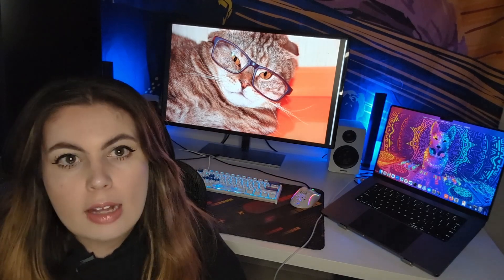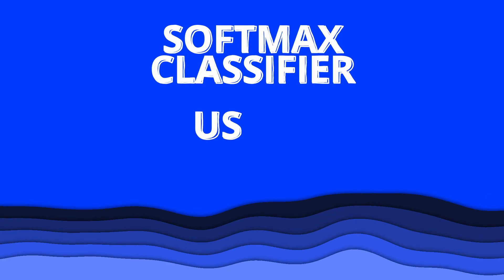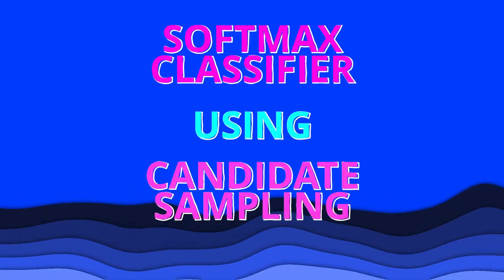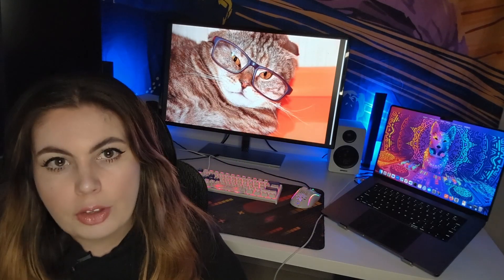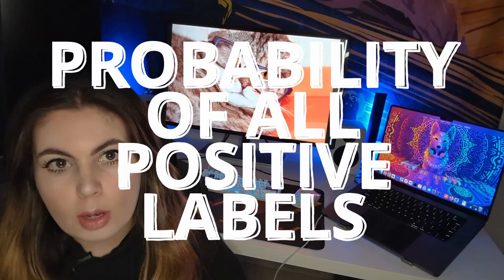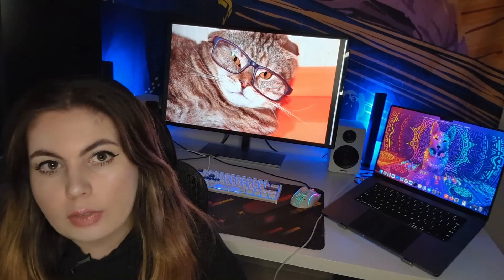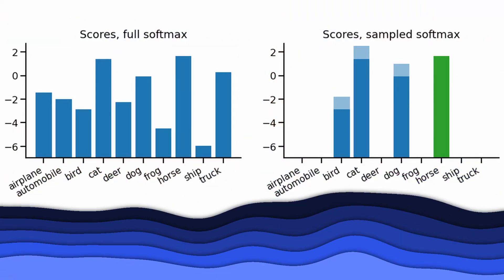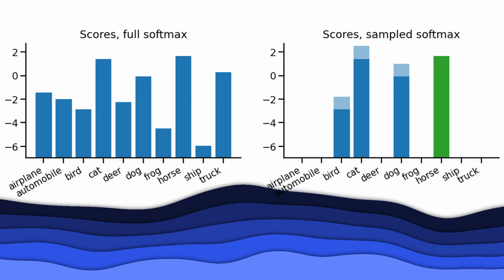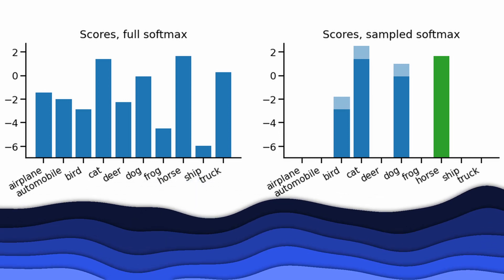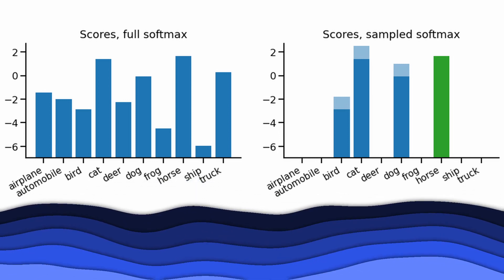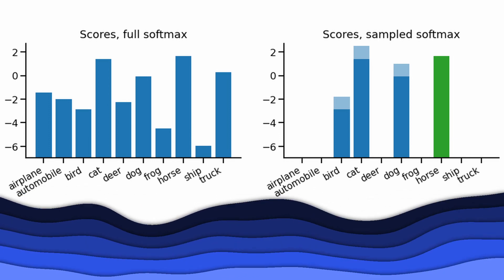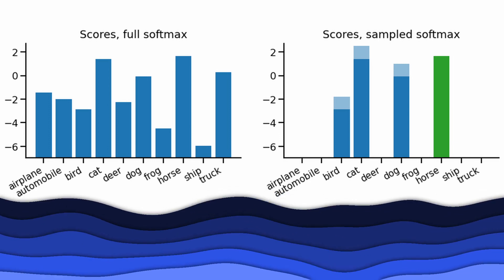Our other option is candidate sampling. With candidate sampling, we calculate the probability for all positive labels but only for a random set of negative labels. For example, if we use the neural network to figure out if an image is a horse, we don't need the entire dataset. Instead, we take a smaller class of non-horse images — birds, cats, dogs — and get a very similar result but with millions fewer computations.